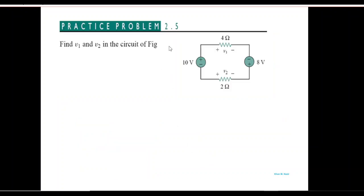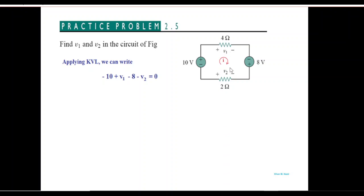Another example — practice problem 2.5 from Alexander's book. Here we have to find V1 and V2. The first thing we do is write the KVL equation starting from one corner: negative 10 plus V1 minus 8 minus V2 equals zero. This is the KVL equation. Now we need to find V1 and V2. First, let's mark the current: V1 is according to this current direction, so V1 can be written as 4 times i, because the current touching here makes it positive.